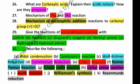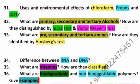Next is uses and environmental effects of chloroform, freons, and DDT. What are primary, secondary, and tertiary alcohols and how they are identified by Lucas test and Victor Meyer's test. Primary, secondary, and tertiary amines and how to identify them by Hinsberg's reagent or Hinsberg's test. Similarly, how to differentiate between RNA and DNA. What are vitamins and their classification.